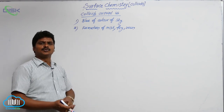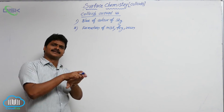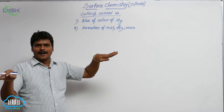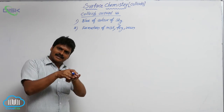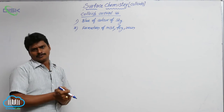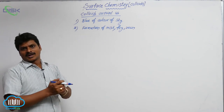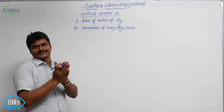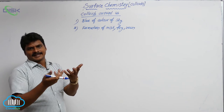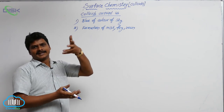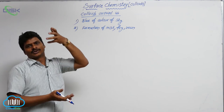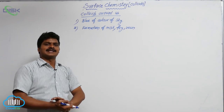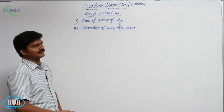Sometimes two oppositely charged clouds — one positively charged and one negatively charged — meet each other. Because of mutual coagulation, the fine water droplets which are in the colloidal range aggregate. Because of this aggregation, the size of the particles increases, and those larger particles come down by gravity as rain.